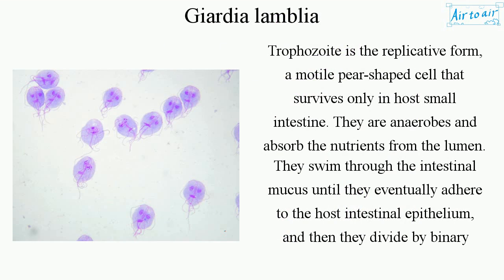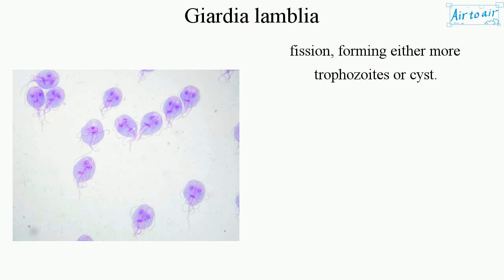Trophozoites are anaerobes and absorb nutrients from the lumen. They swim through the intestinal mucus until they eventually adhere to the host intestinal epithelium, and then divide by binary fission, forming either more trophozoites or cysts.